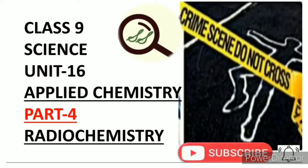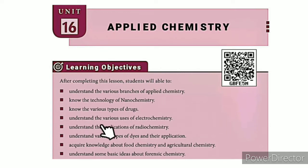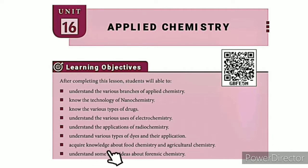Greetings from SS class 9 science unit 16, applied chemistry part 4: radiochemistry. The learning objectives are: understand the various branches of applied chemistry, know the technology of nanochemistry, know the various types of drugs, understand the various uses of electrochemistry, understand the applications of radiochemistry, understand the various types of dyes and their application.